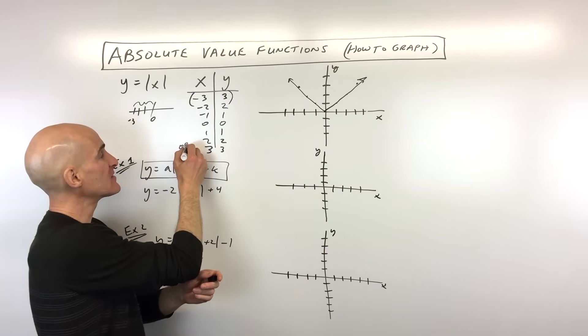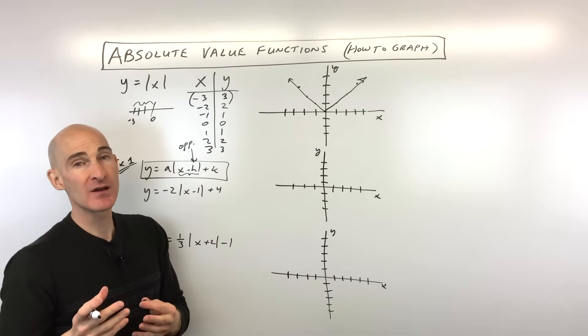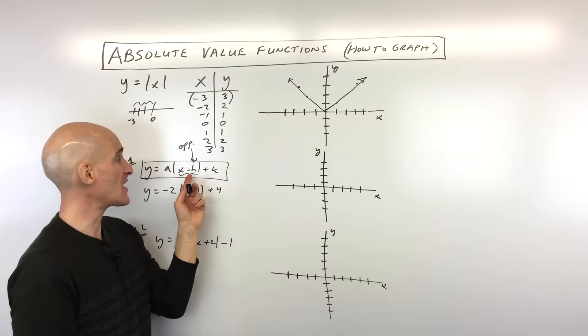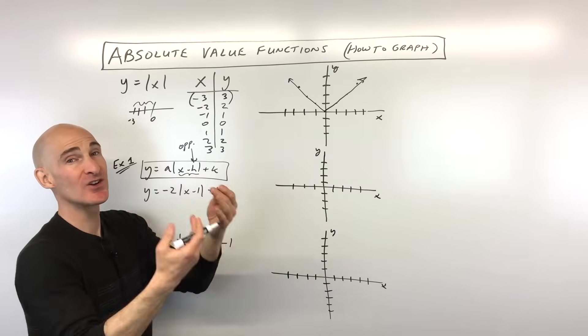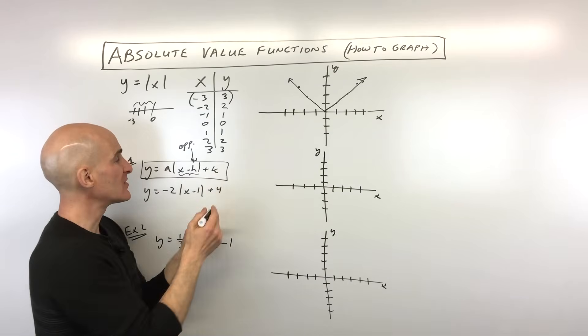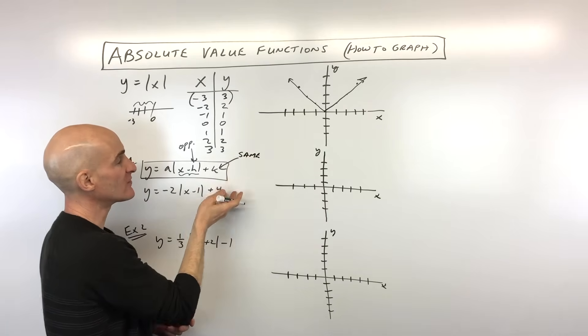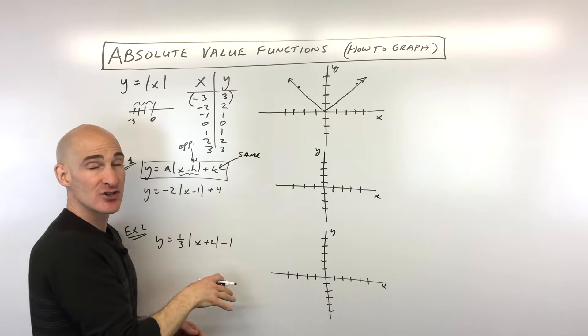But this one has the opposite effect on the graph. So that means if it's x minus 2, it would actually go positive 2, so to the right. If it was x plus 2, it would actually go negative 2, so to the left 2. But this k value actually has the same effect on the graph, meaning if it's positive, you're going to shift it up. And if it's negative, you're going to shift it down.